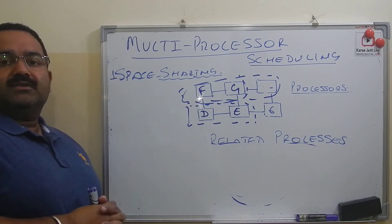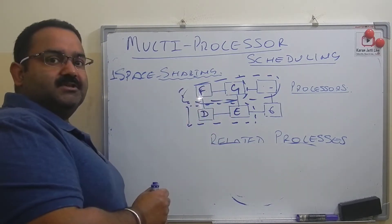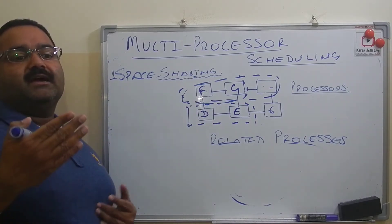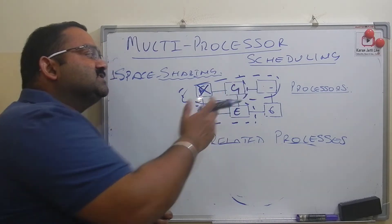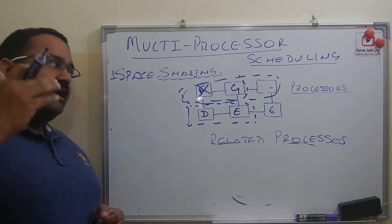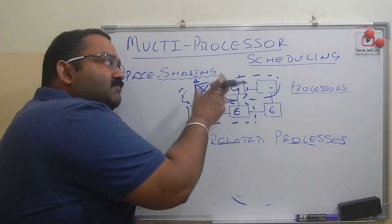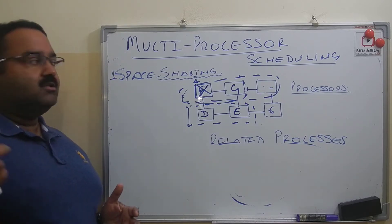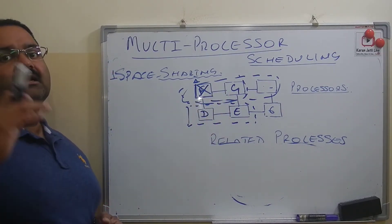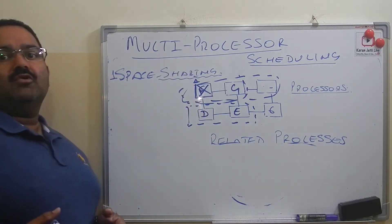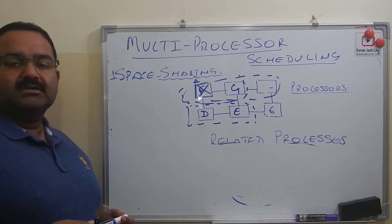There is a disadvantage of space sharing scheduling. For example, we have two processors F and G executing together. If process F finishes execution but G is still running, the processor allocated to F will not be released until all related processes finish execution. So processor 1 is idle but cannot be used by other processes until G also finishes. This wastage of processor time is the main disadvantage of space sharing scheduling.